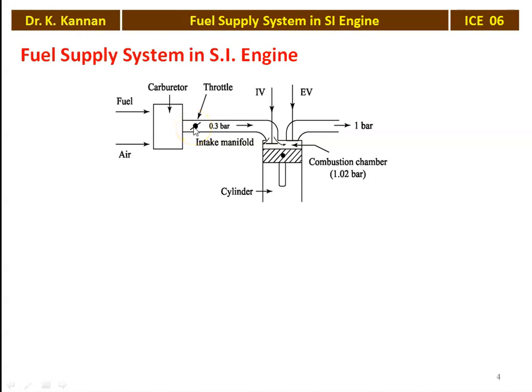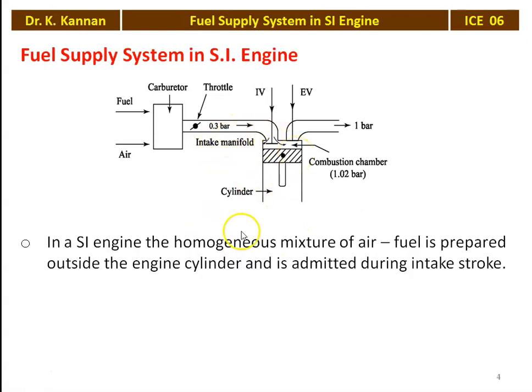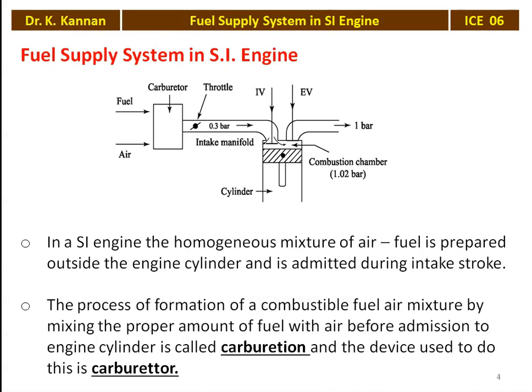The required quantity of air fuel mixture is supplied to the engine. When the engine intake valve opens, the air fuel mixture enters into the engine cylinder — the combustion chamber. When the piston is descending and moving downward, the air fuel mixture is drawn into the engine cylinder during the suction stroke. In a SI engine, the homogeneous mixture of air and fuel is prepared outside the engine cylinder and admitted during the intake stroke. The process of formation of combustible fuel-air mixture by mixing proper amount of fuel with air before admission to the engine cylinder is called carburetion.